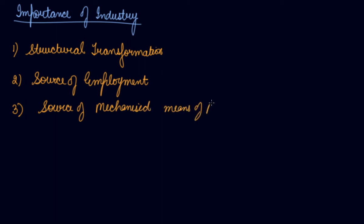The third importance is as a source of mechanized means of farming. With the establishment of industries, machines such as tractors, threshers, and harvesters are manufactured and used in farming. This has changed farming into a mechanized process, improved output and productivity, and thus substantially increased the growth and development of the economy and the industrial sector.